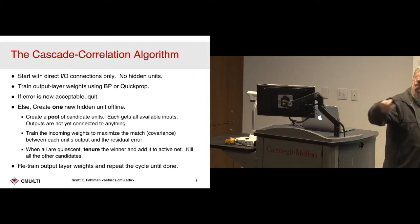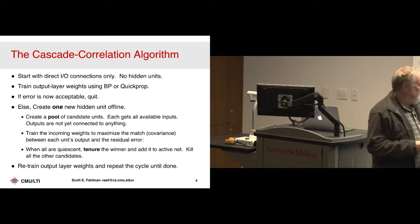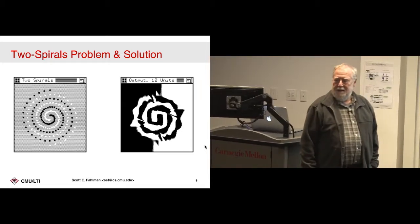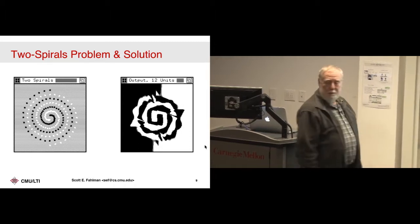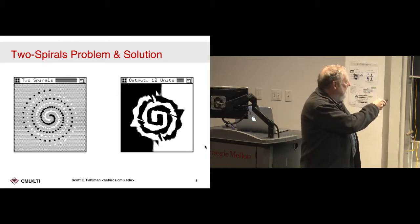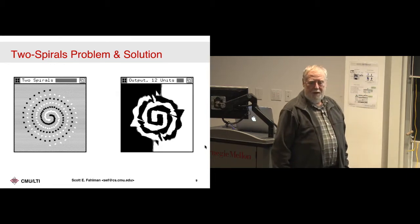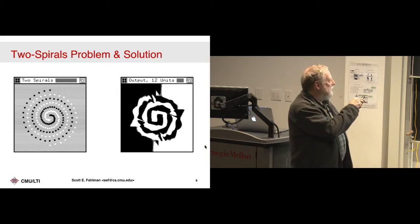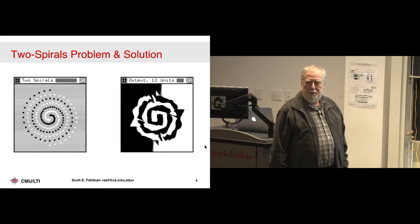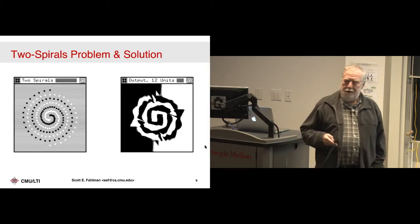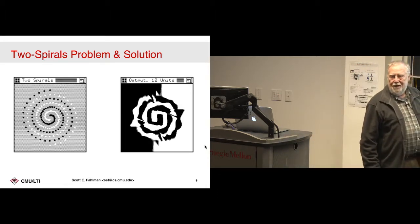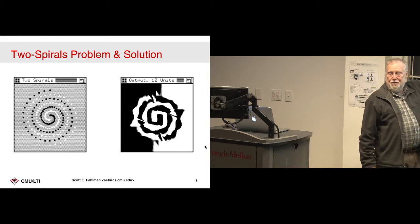So it's building the network unit by unit, layer by layer. Here's what was considered a hard problem back in the day: a couple of hundred points arranged in two spirals. You've got two continuous inputs, and you want to say yes or no — black or white. One binary output, two continuous inputs, a couple of hundred training points. You're not going to solve this with a perceptron — this is definitely not linearly separable. You can't put any separating plane through this that's going to do anything very useful.